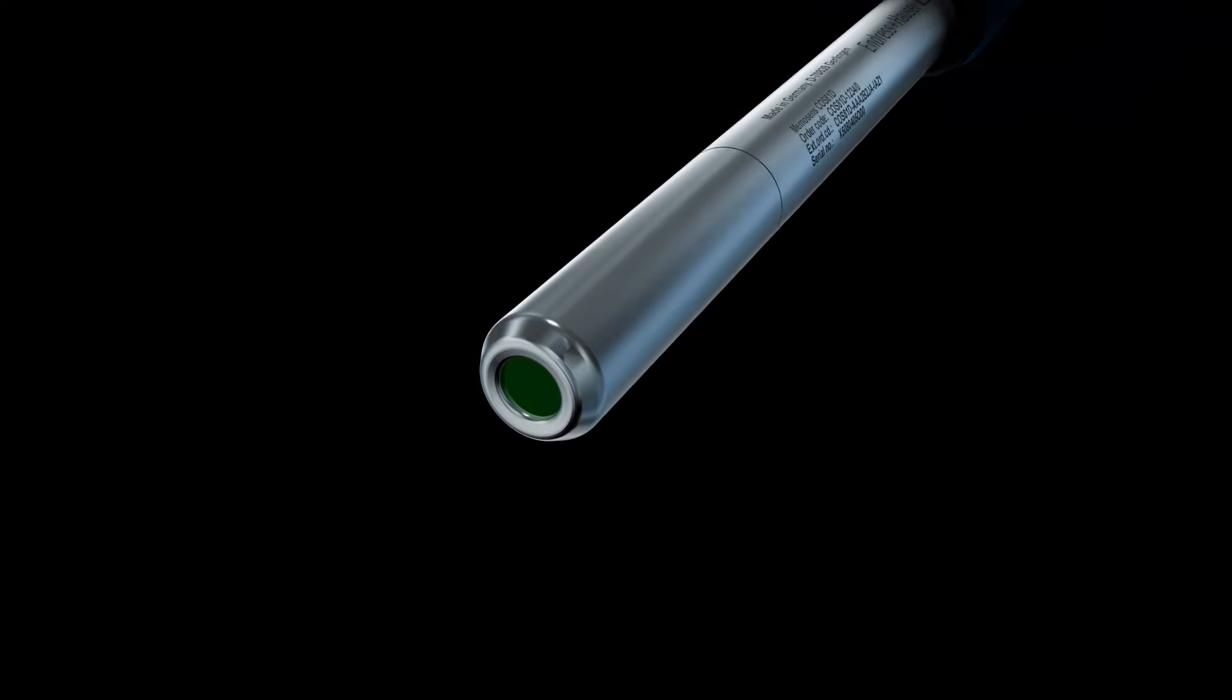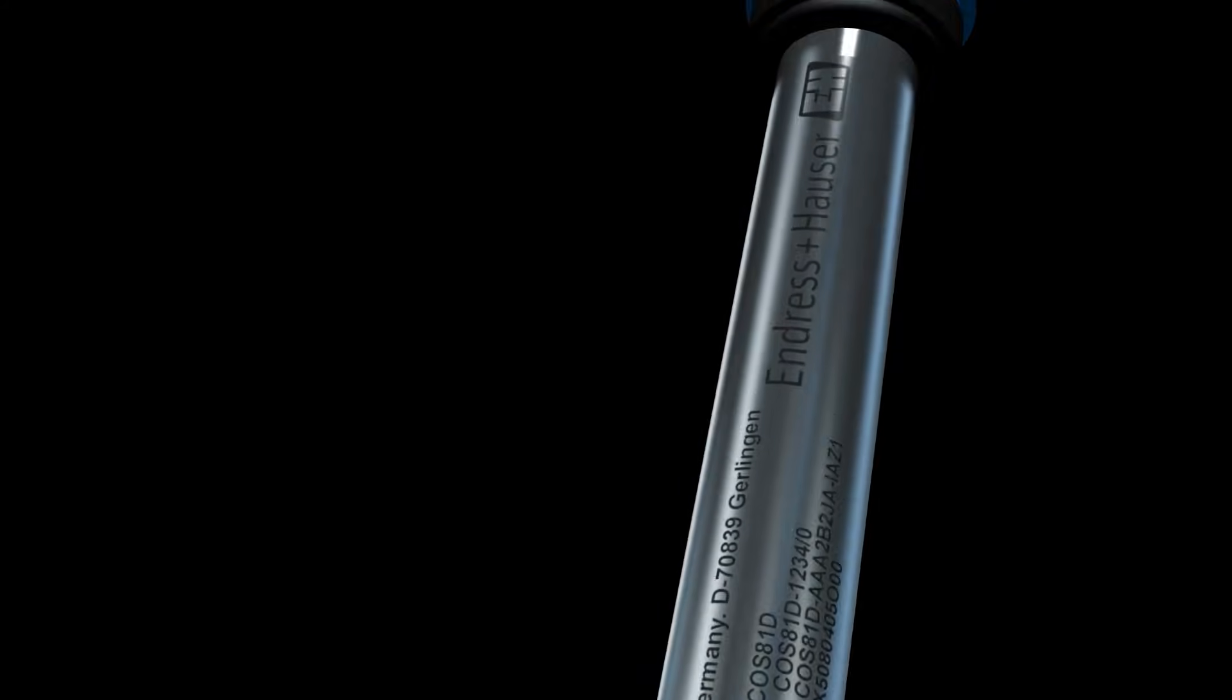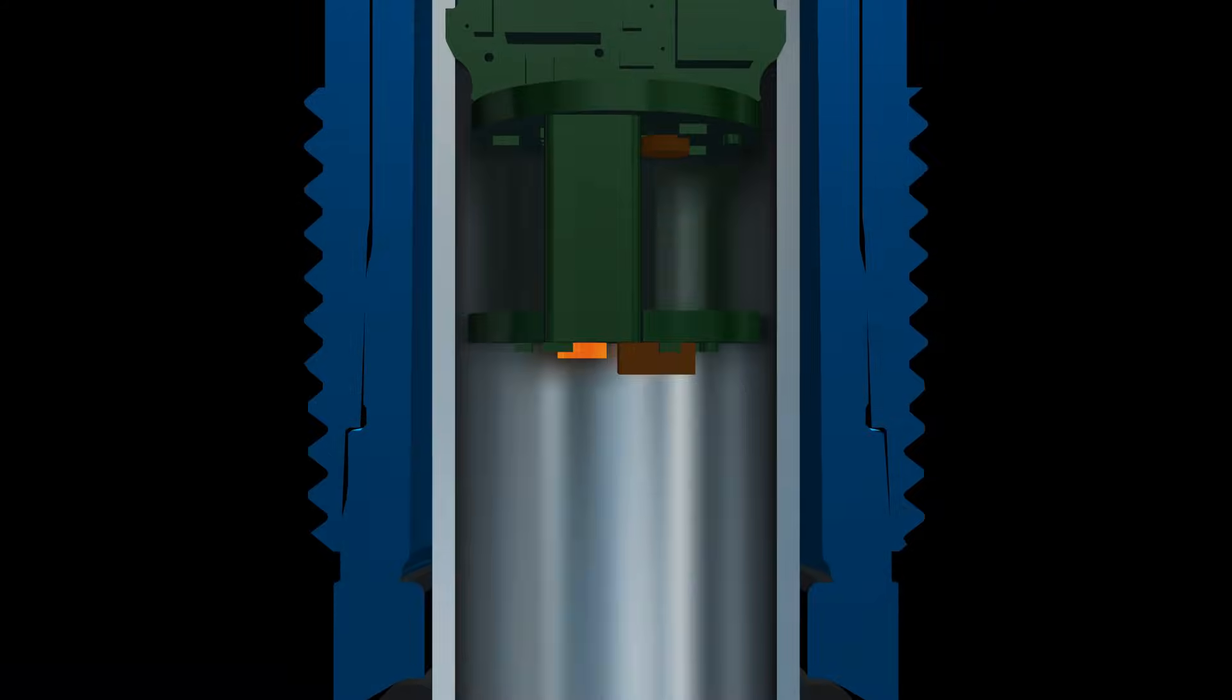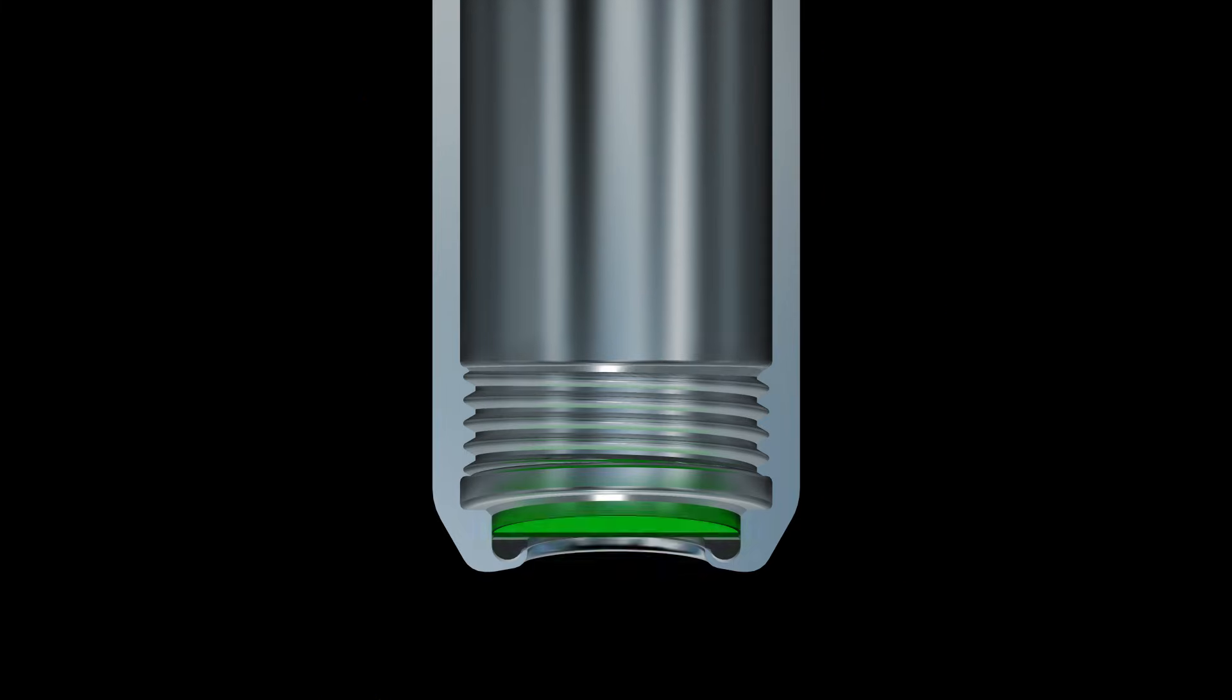The optical oxygen sensor uses the fluorescence quenching measuring principle. This sensor is equipped with an LED, a photodiode, and a separating section that is covered by an oxygen permeable layer.